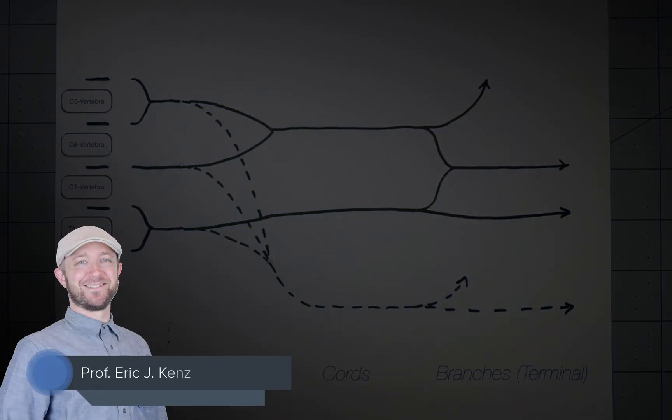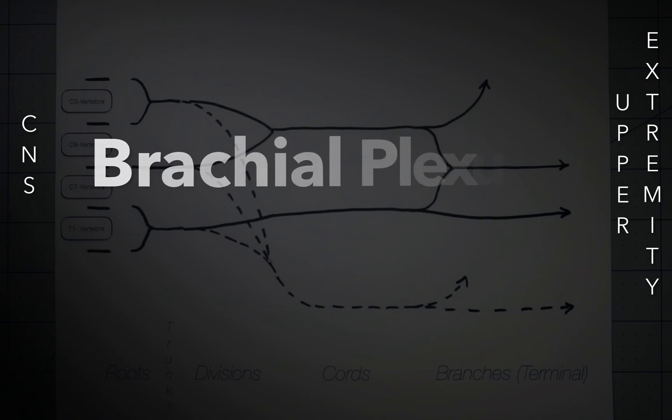What's up everyone? The goal of this video is to help you learn the network of nerves that connects the central nervous system to the upper extremity. That is, the brachial plexus.